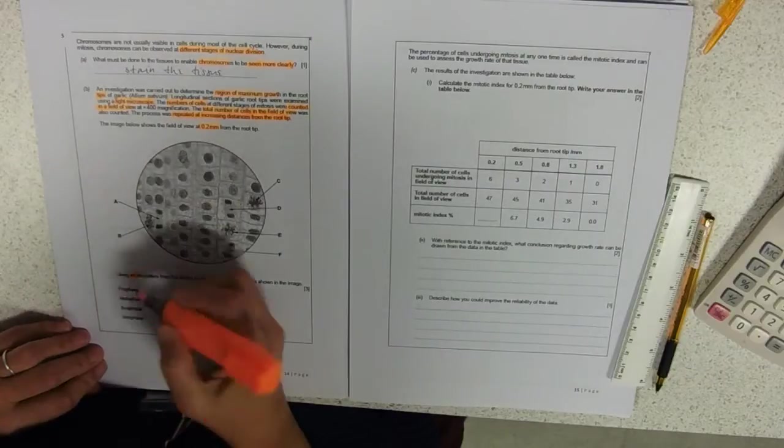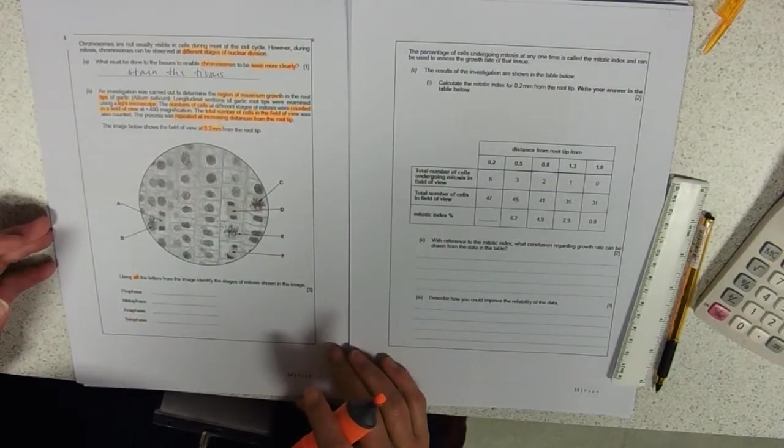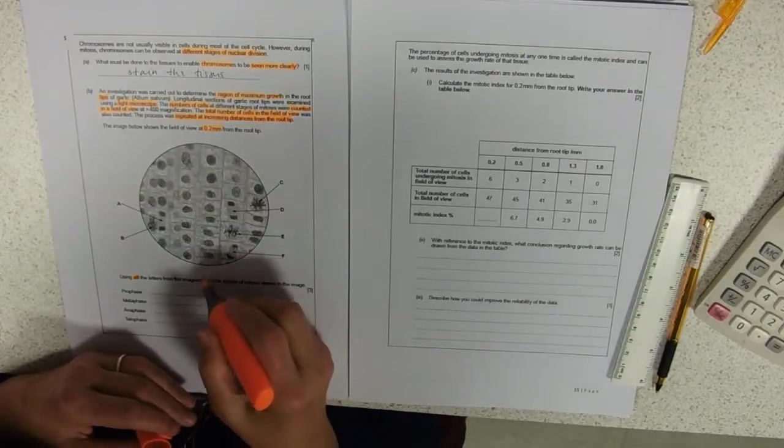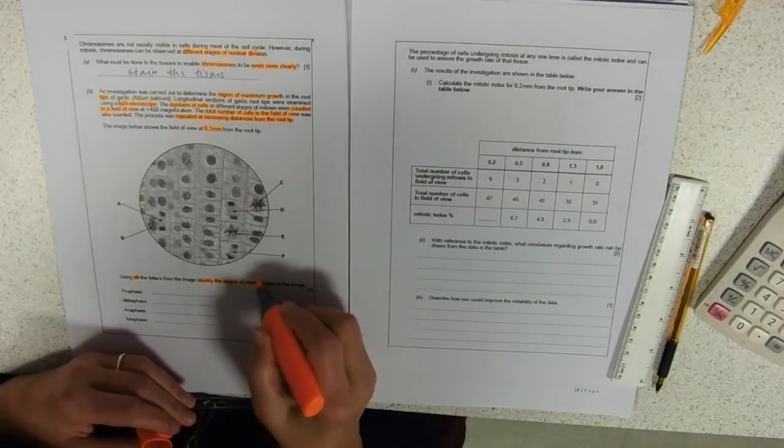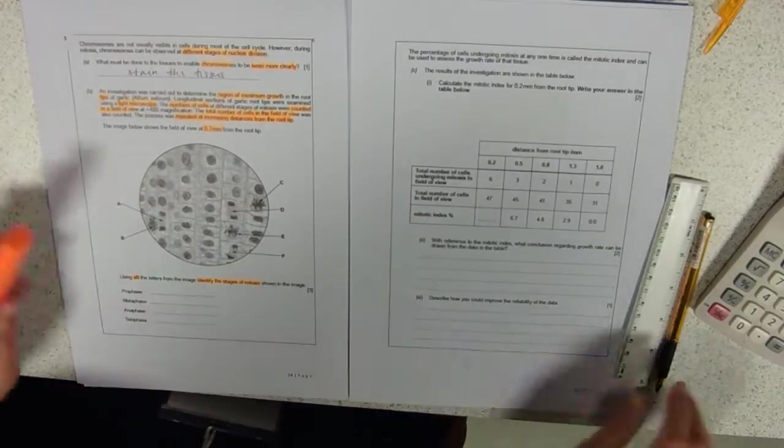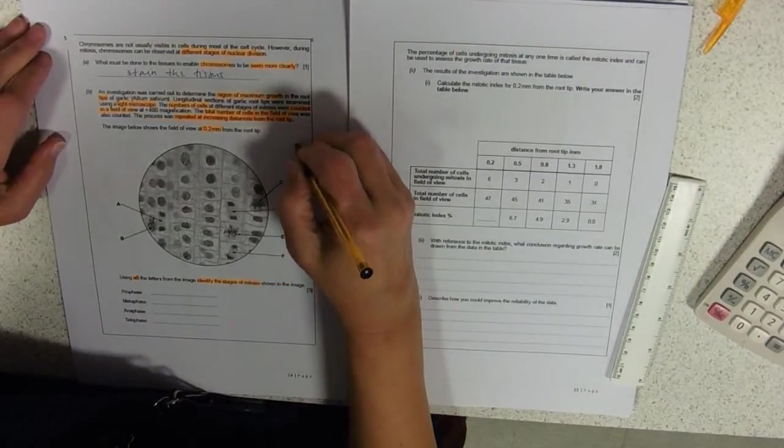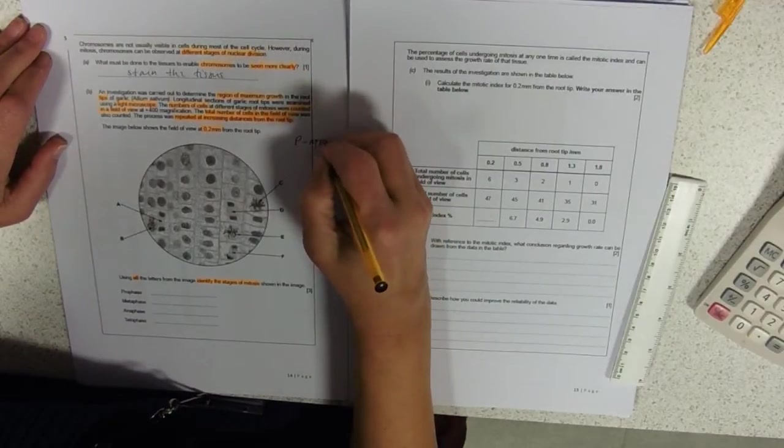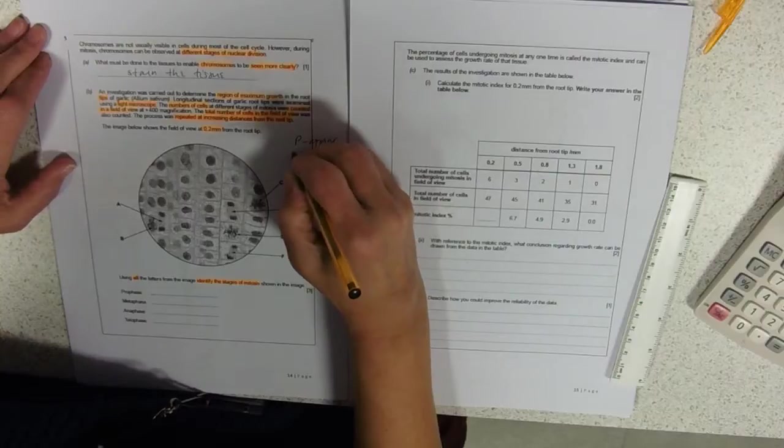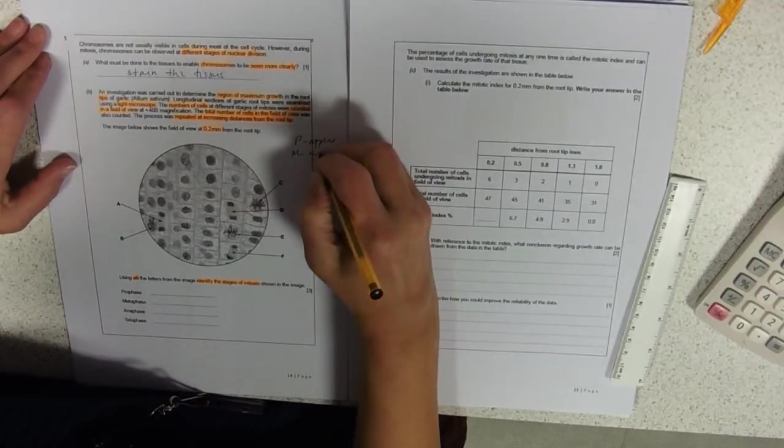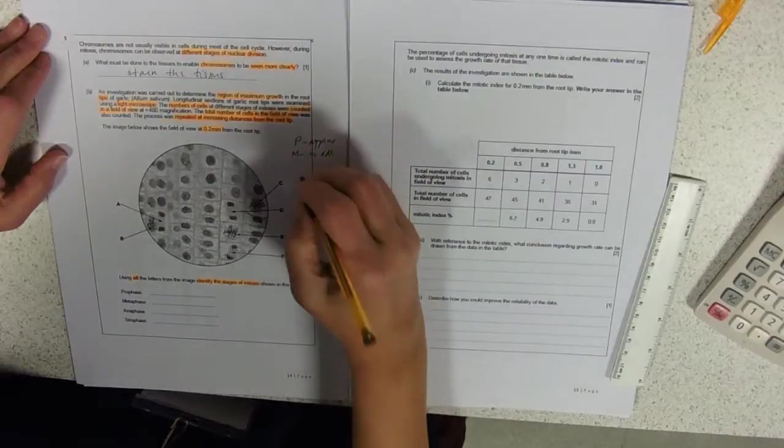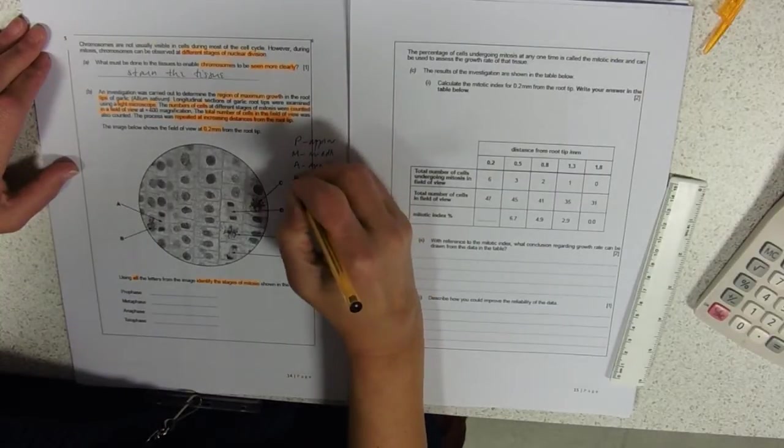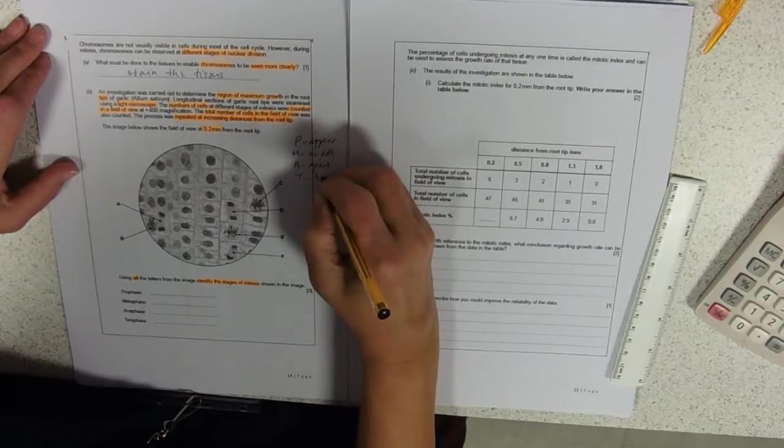Using all the letters from the image A, B, C, D, E, F, identify the stages of mitosis. So what do I know about mitosis? I've got prophase where they appear. Metaphase where they're in the middle. I always think they look like somebody's put a thumb on a spider. Anaphase where they're moving apart. And telophase where you've got two nuclei.